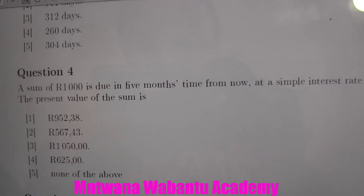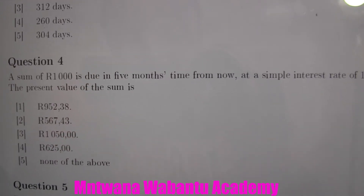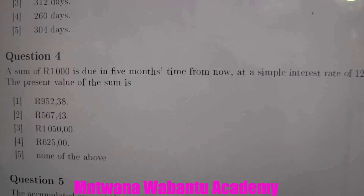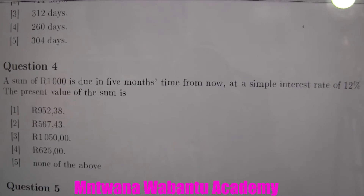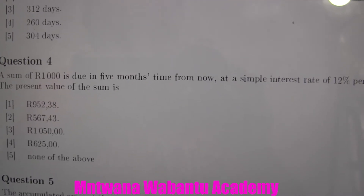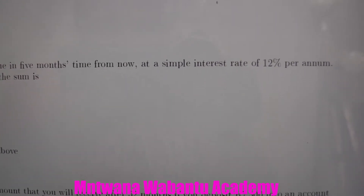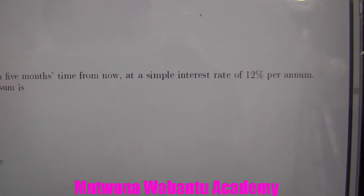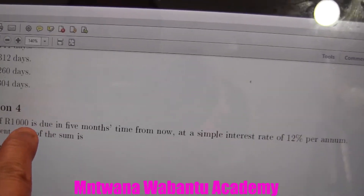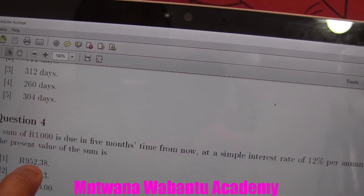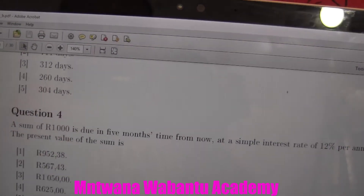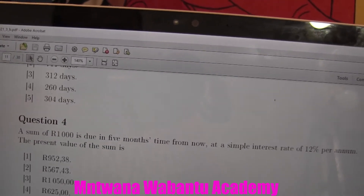We have a financial mathematics question. The sum of 1000 is accumulated during five months — this amount is going to be accumulated in five months from now. Simple interest applies, which is 12% per annum. They want the present value, or in other words, the principal.